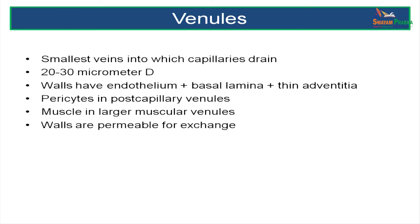Venules are smaller sized veins with a diameter of about 20 to 30 micrometers. They have an endothelium, a basal lamina and a very thin adventitia. Pericytes may be present in post-capillary venules, whereas muscle cells will be present in larger muscular venules. The walls of venules are permeable to exchanges taking place.